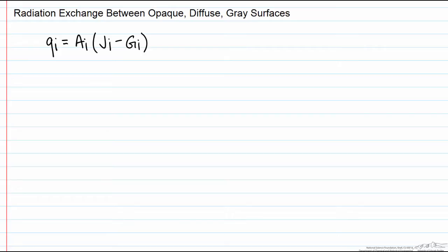J is our radiosity which is all the radiation that leaves the surface and G is our irradiation which is the radiation that's incident on the surface.